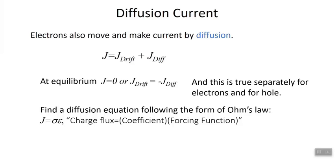We can justify an expression for diffusion current by looking at the form of Ohm's law: j equals sigma times E, where current density j equals conductivity times electric field. Current density is just charge flux — charge per unit area per unit time. So we call it charge flux, which equals a forcing function. For drift current that forcing function is the electric field, and the constant of proportionality is the electrical conductivity sigma. For diffusion current we follow this as a model: diffusion current happens because there's a concentration gradient rather than an electric field.